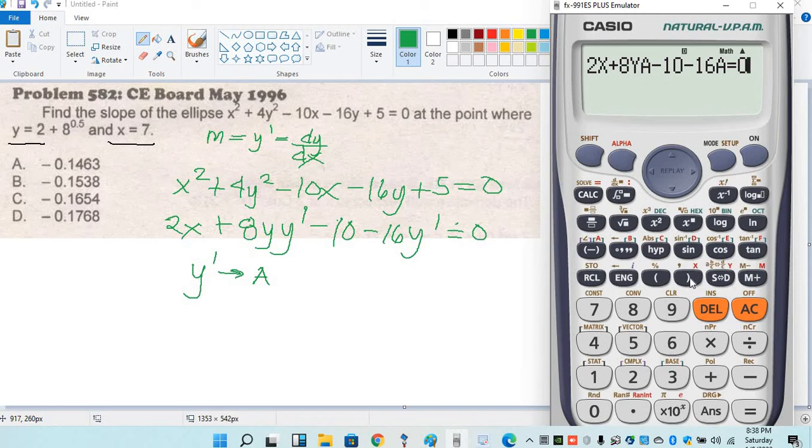So comma, a. Then shift solve. x is 7, y is 2 plus 8 raise to 0.5, equal. Solve for a, equal. So negative 0.1768. So the answer is letter D.